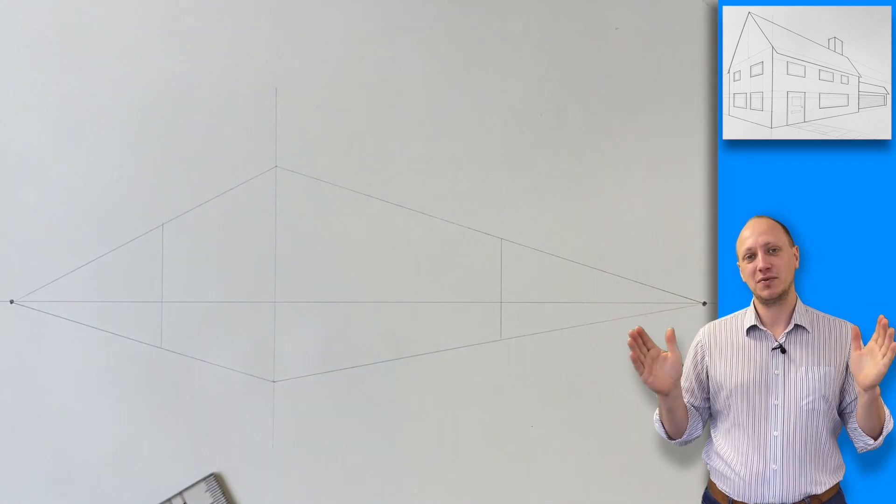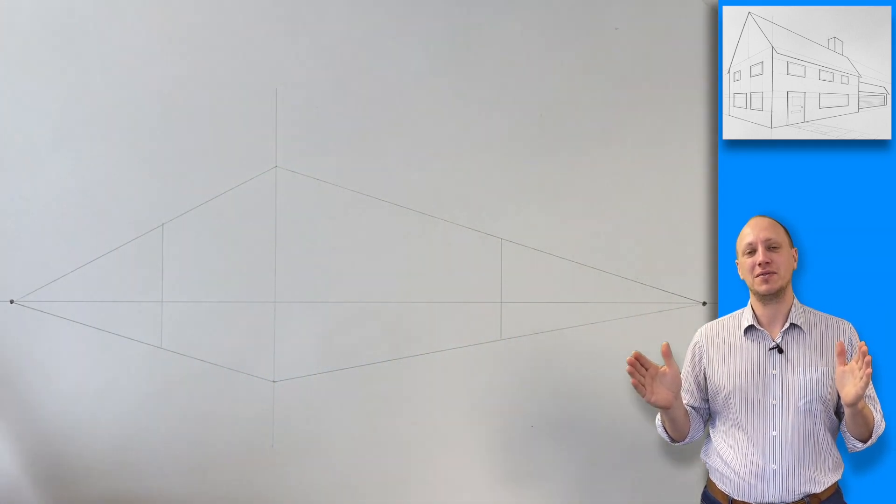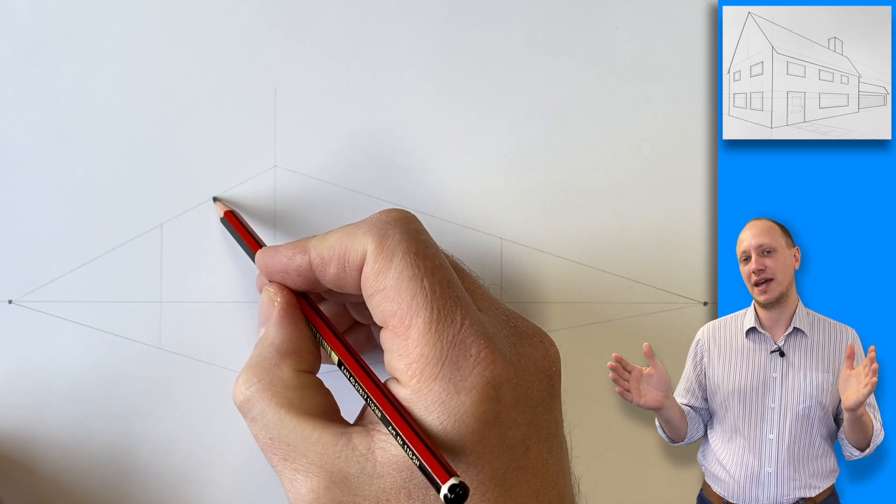And then add in the edges which will become the sides of your house. Think about the size and shape that a house would be.